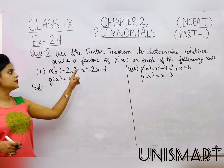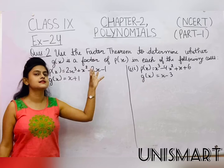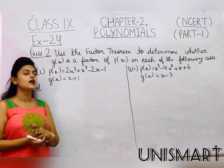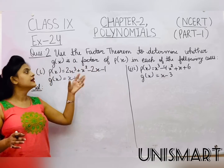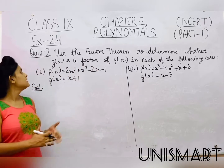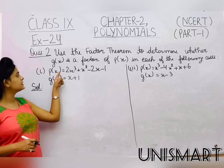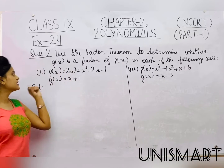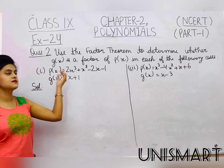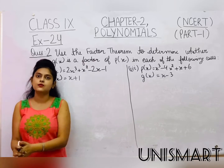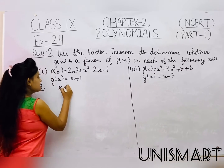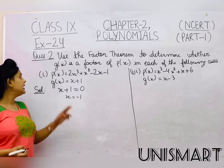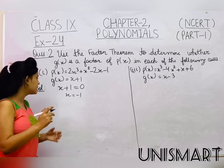Question number 2: use the factor theorem to determine whether g(x) is a factor of p(x) in each of the following cases. First, p(x) = 2x³+x²-2x-1 is given. g(x) = x+1 is also given. We set g(x) = 0, so x+1 = 0 gives x = -1. Now we will put this value into the p(x) polynomial.